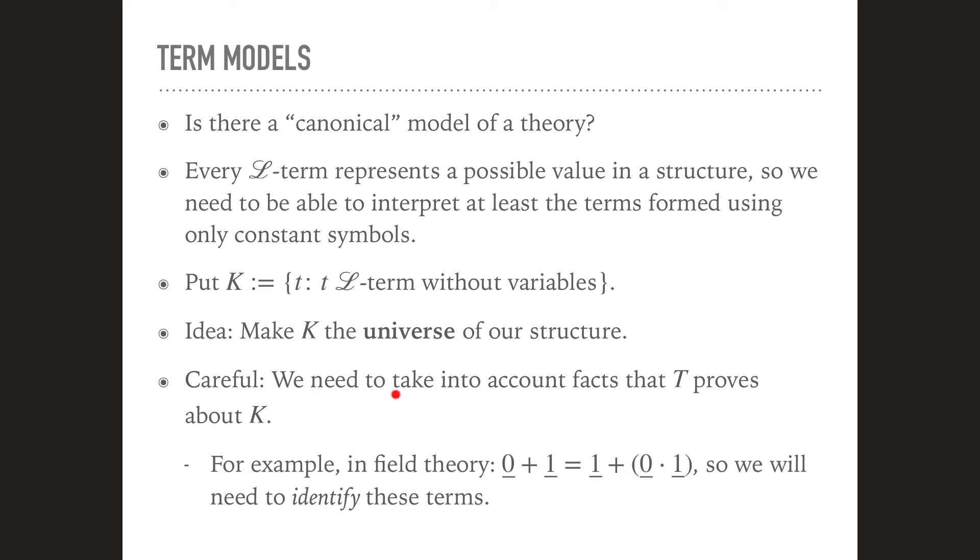We need to take into account facts that T proves about K. So for example, in field theory, we can prove that 0 plus 1 is equal to 1 plus 0 times 1. So these are both terms on the left side and the right side that don't feature any variables. So they would be part of the set K here. And the theory of fields, from the field axioms, we can prove that these terms actually are equal.